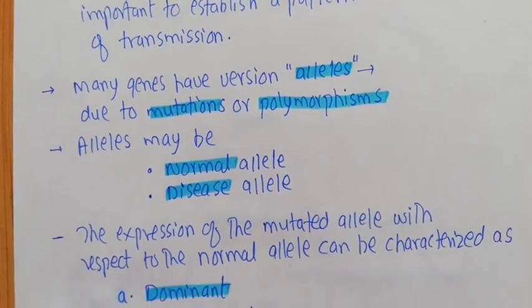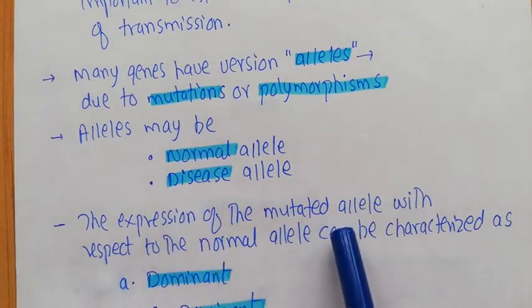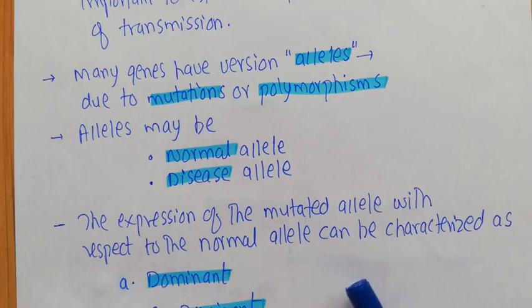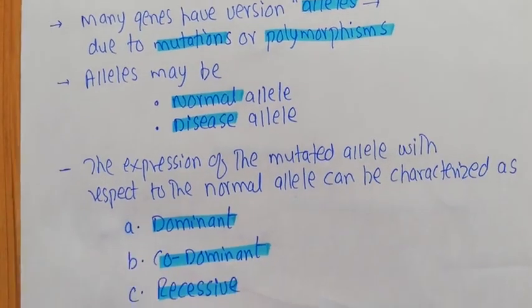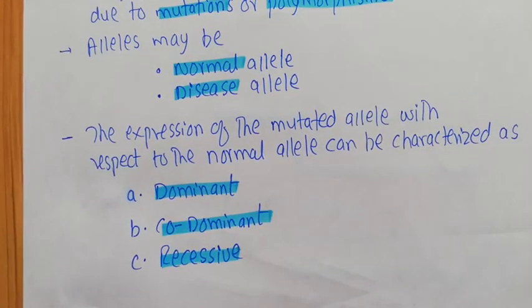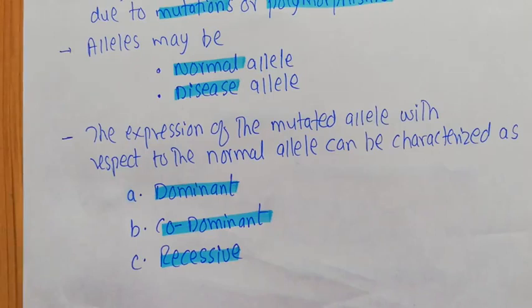These diseased alleles are sometimes also known as mutated alleles, so the terms 'mutated' and 'diseased' alleles are used interchangeably. The expression of these mutated alleles with respect to the normal allele can be characterized as dominant, co-dominant, or recessive. So you can actually have three kinds of expression patterns of these disease alleles.